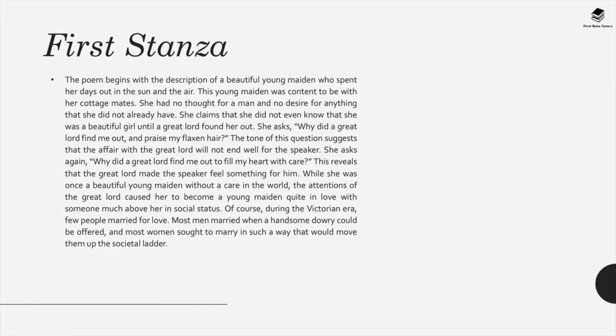In the first stanza of Cousin Kate, the poem begins with a beautiful young maiden who spent her days in the sun and air, content with her cottage mates and desiring nothing she didn't already have. She claims she didn't know she was beautiful until a great lord found her. She asks rhetorically, 'Why did a great lord find me out and praise my flaxen hair?' and 'Why did a great lord fill me out to fill my heart with care?' — suggesting the affair ended badly.